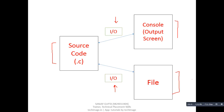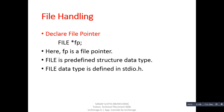Now after understanding the concept, we have to understand how we can implement file handling in a C program. The first statement will be the declaration of a file pointer. For this purpose we write: FILE *fp. When we use the asterisk symbol with a variable it becomes a pointer, so here we are creating fp as a file pointer. This capital FILE is a predefined structure data type.